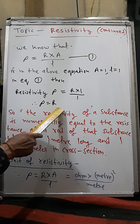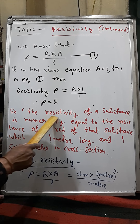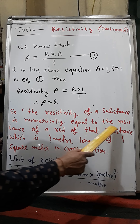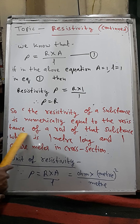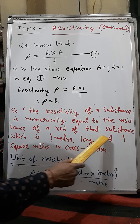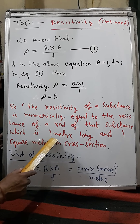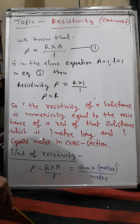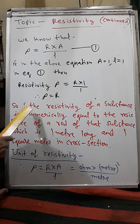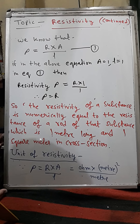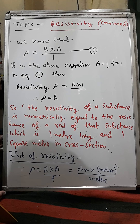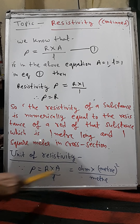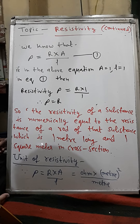So the definition of specific resistance or resistivity is: the resistivity of a substance is numerically equal to the resistance of a rod of that substance which is one meter long and one square meter in cross-section. Please note this down. Now let's find the units of resistivity — the same method you will follow in higher classes as well.